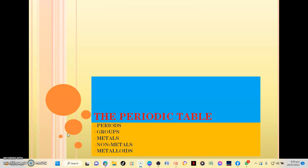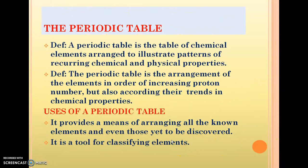So what is the periodic table? A periodic table is the table of chemical elements arranged to illustrate the patterns of recurring chemical and physical properties. The second definition: the periodic table is the arrangement of the elements in order of increasing proton number, but also according to their trends in chemical properties — that one sounds much easier.